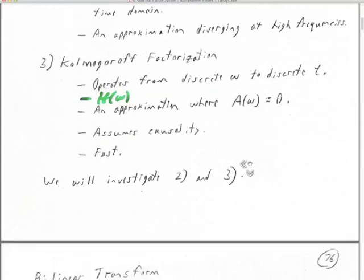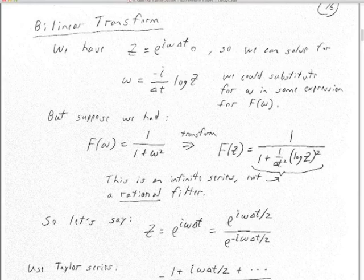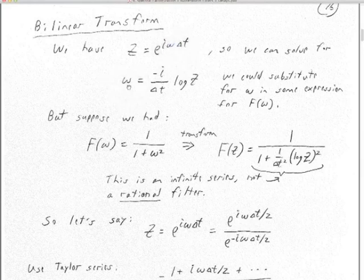Let's investigate the bilinear transform. Here's our omega definition of z: z equals e to the power of i times omega times delta t. Notice I put in delta t — I'm not assuming it's 1 anymore. The bilinear transform would start with a closed-form expression for our desired filter in omega. We can solve for omega by taking the log of both sides: omega equals minus i divided by delta t times log of z. We can now substitute this expression for omega in our desired filter expression.